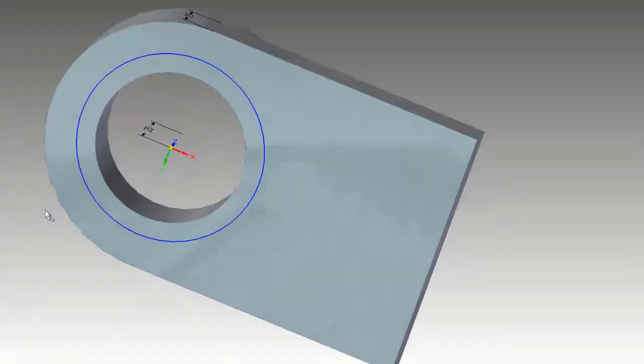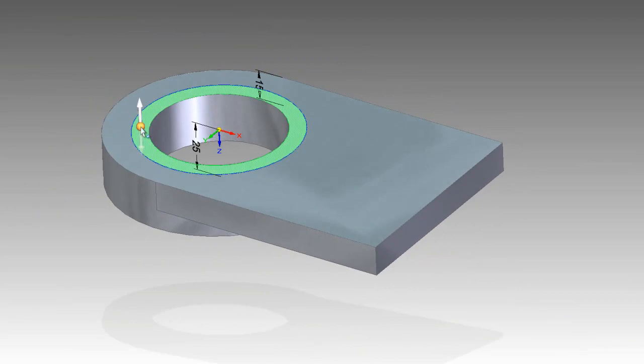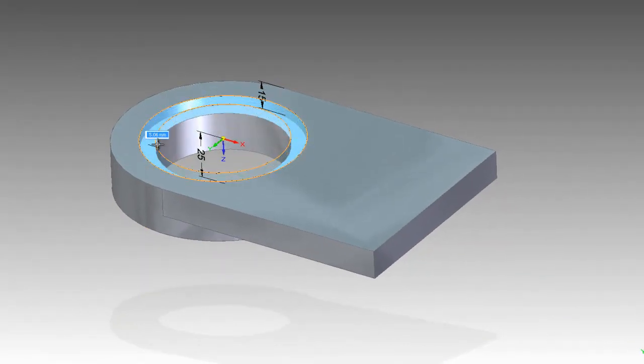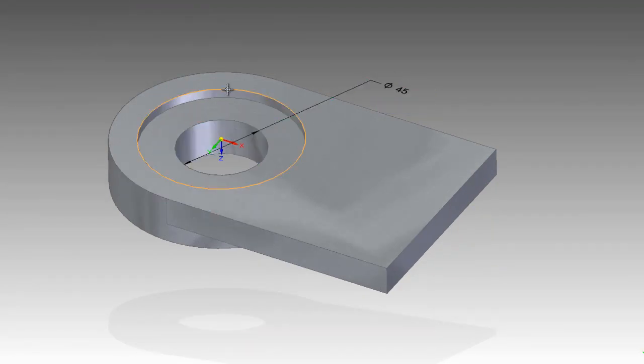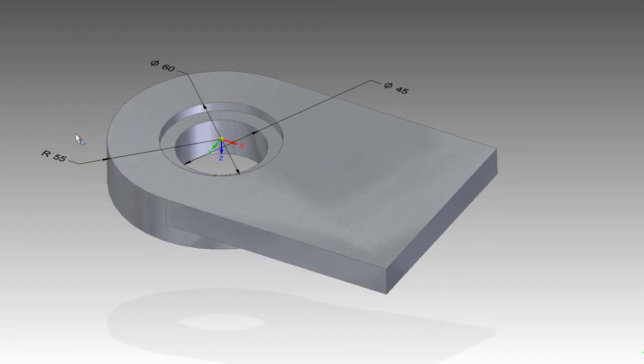A key to design productivity is to reduce the number of direct commands. The fewer the steps, the faster the process. Commands are inferred by cursor position and geometric intent. Synchronous technology allows relationships to be added at any time and in any order.